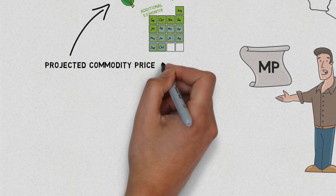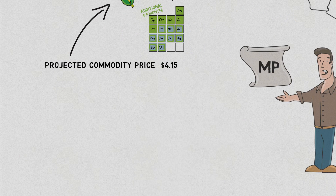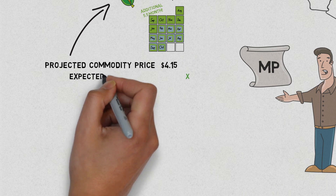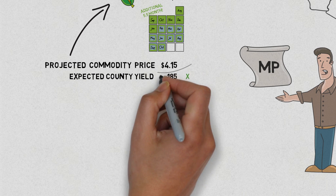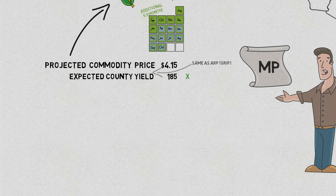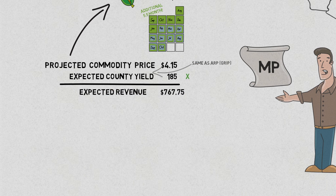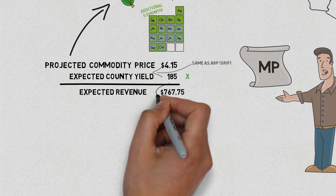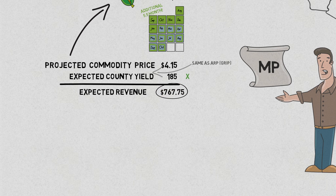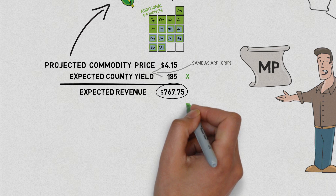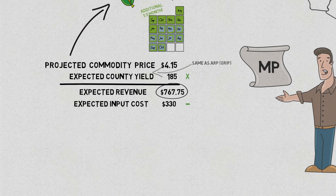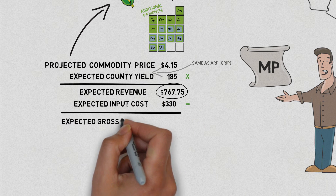Now take Margin Protection's projected commodity price — let's say $4.15 — and multiply it with the expected county yield. Margin Protection uses the same county expected yield as ARP, which used to be called GRIP. This gives you an expected county revenue of $767.75. For available counties, Margin Protection sets a specific expected input cost value — in our example, $330. So if your expected revenue under Margin Protection is $767.75, minus your expected input cost of $330, you get the expected gross margin of $437.75.